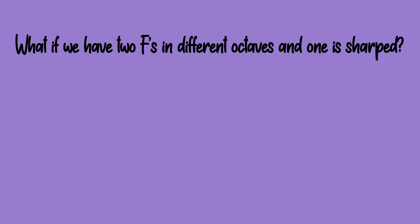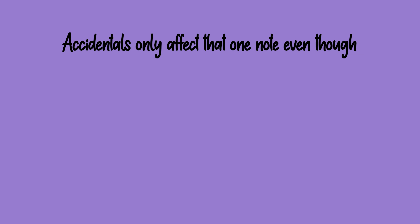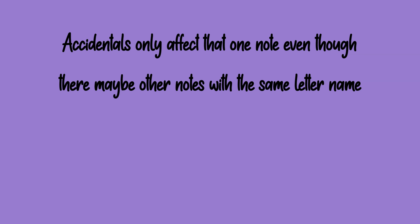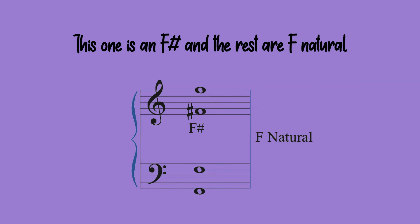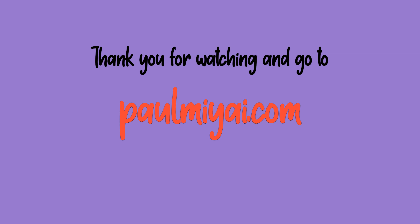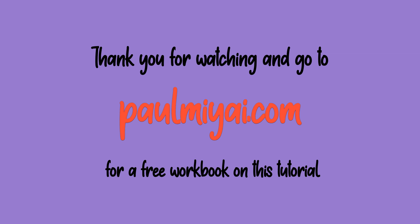What if we have two F's in different octaves and one is sharped? Accidentals only affect that one note even though there may be other notes with the same letter name. This one is F sharp and the rest are F natural. Thank you for watching and go to palmei.com for a free workbook on this tutorial.